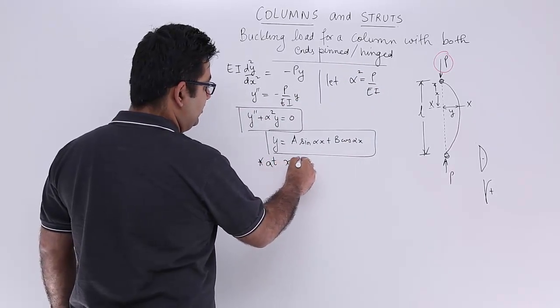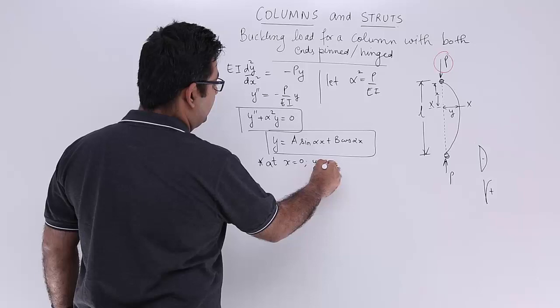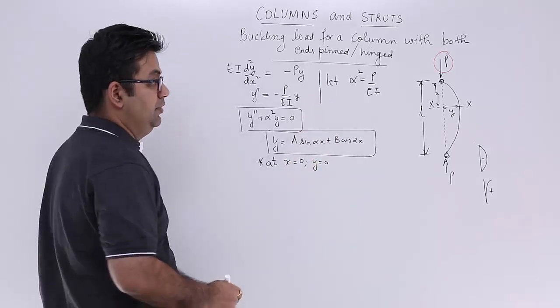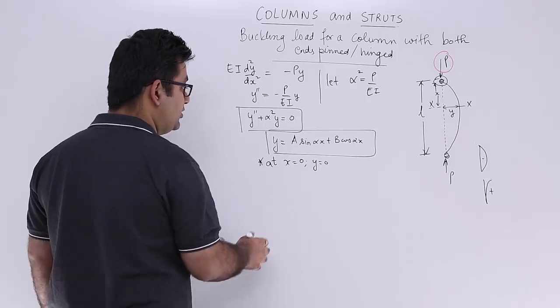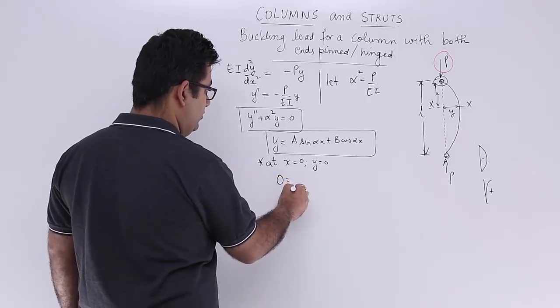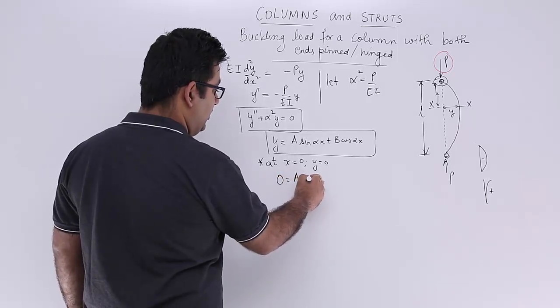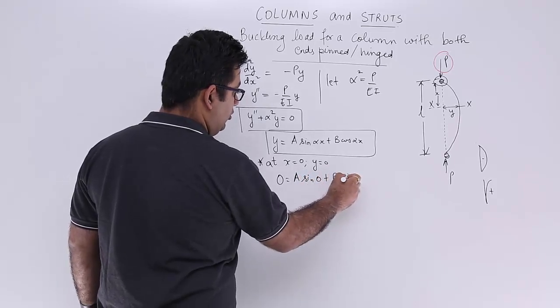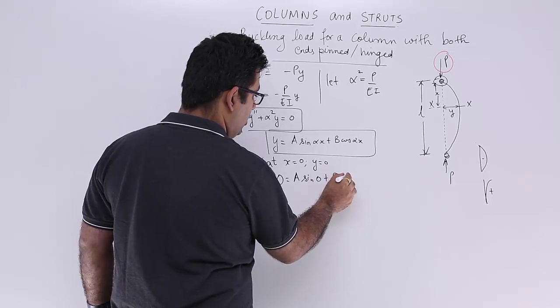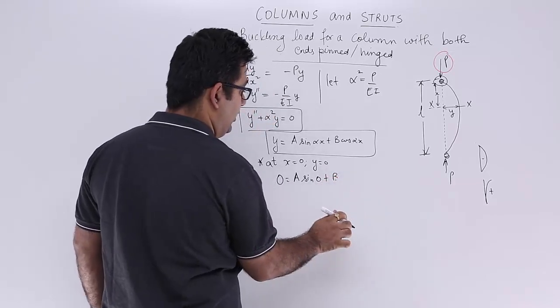It says at x is equal to 0, we can see that the deflection is 0. At this point there is no deflection. So I can say that 0 is equal to A into sin 0 plus B into cos, let's get rid of this, so this is B into cos 0.